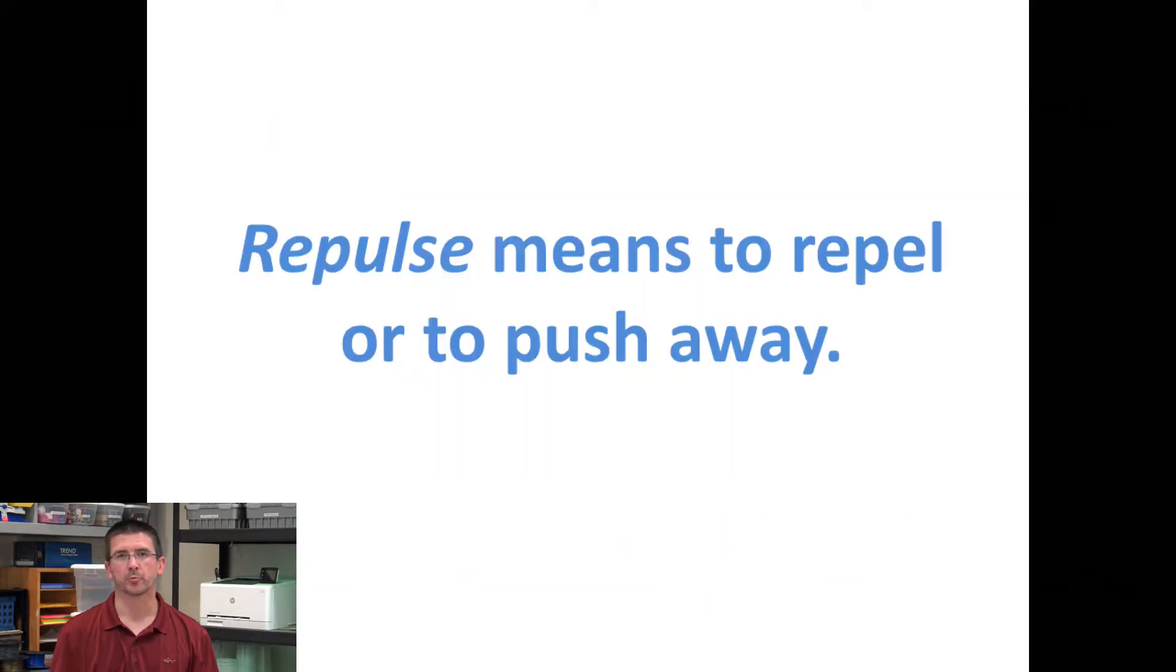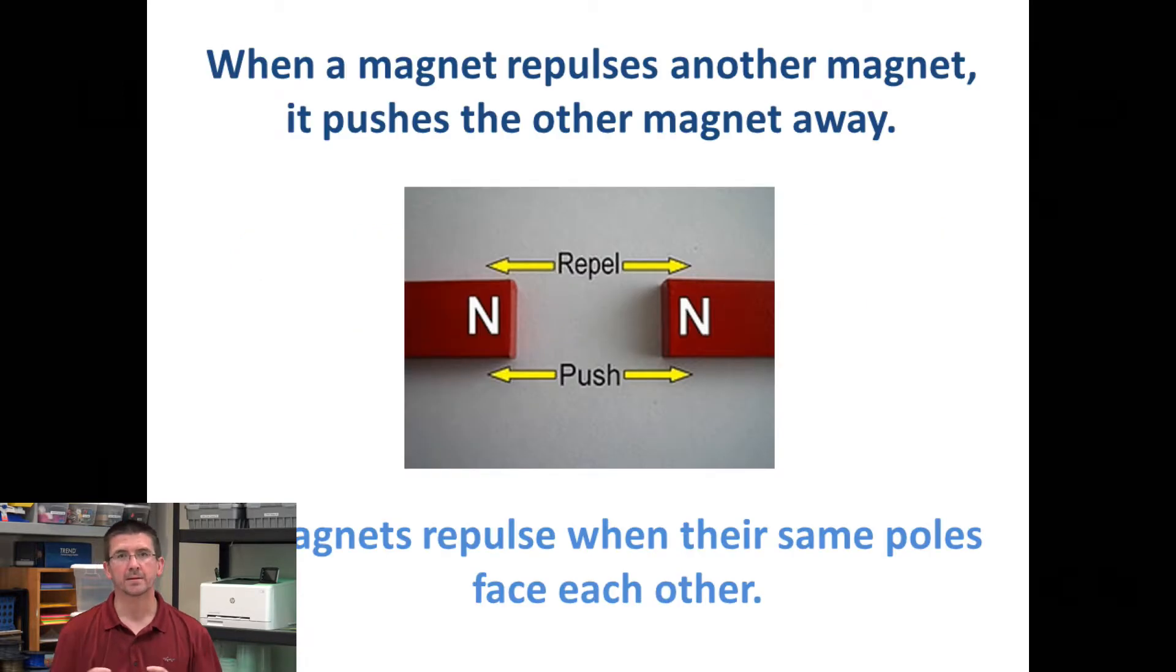When we say repulse, we mean to repel, to push away. Magnets repel each other when like poles are facing each other. So if you put the north and north pole of two magnets together,